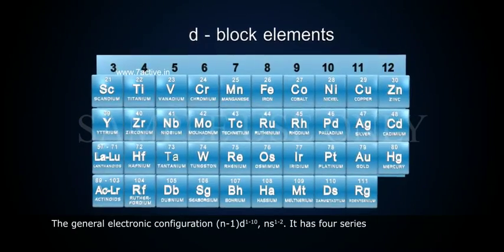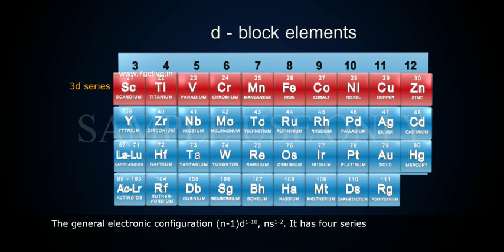The general electronic configuration is (n-1)d 1-10, ns 1-2. It has 4 series.